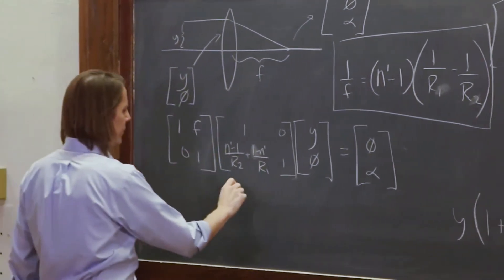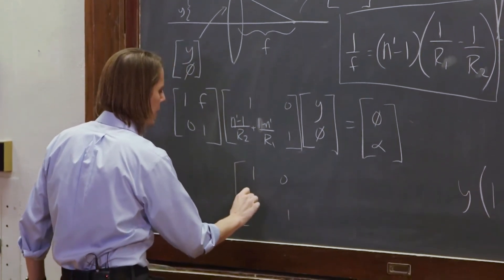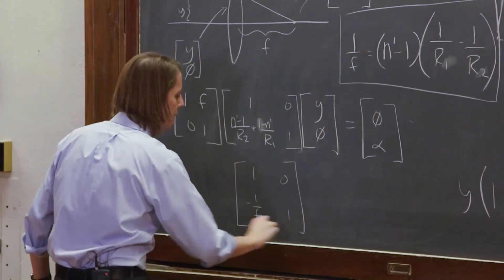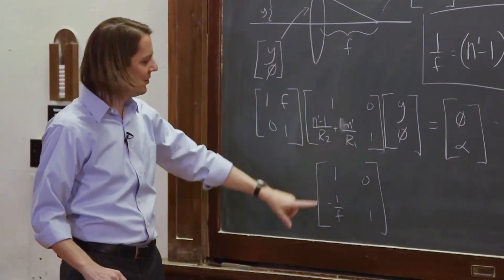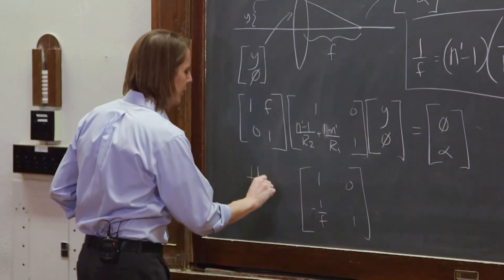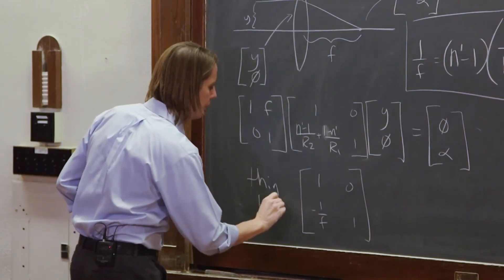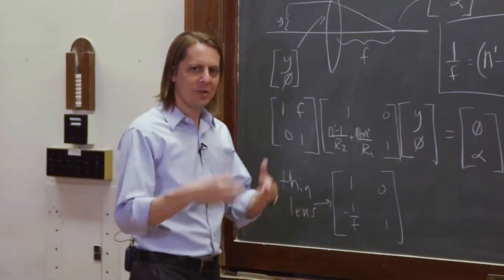It also tells us we can use this to realize that this matrix we multiplied through here is the thin lens matrix. You could also write it like this: 1, 0, minus 1 over f, 1. If you don't want to think about the radius of curvature and all these other properties of the thin lens, you just put its focal length there, minus 1 over f, and then this is the thin lens matrix also.